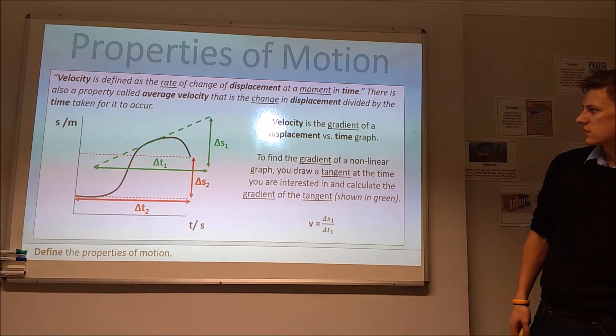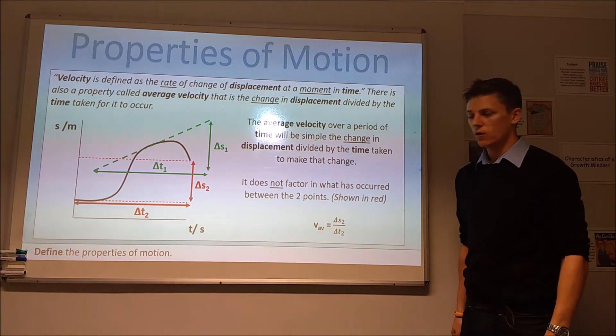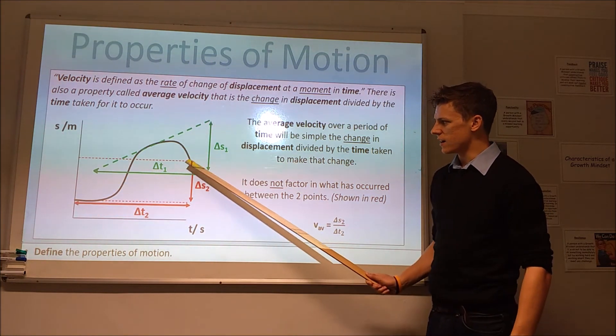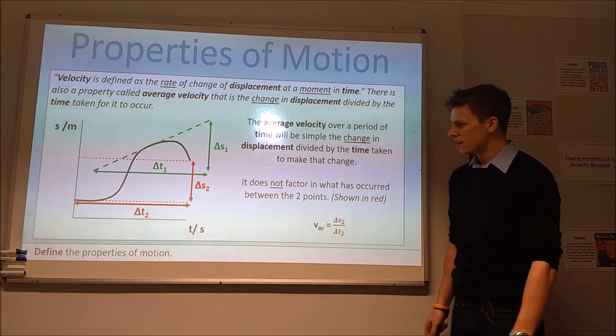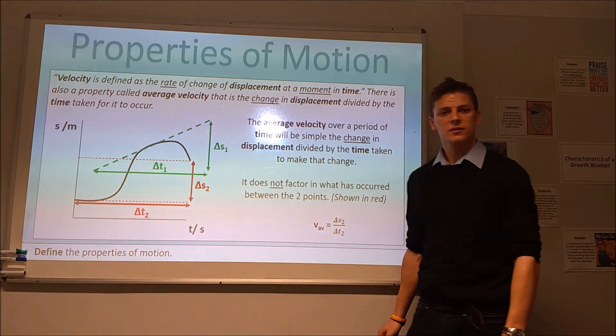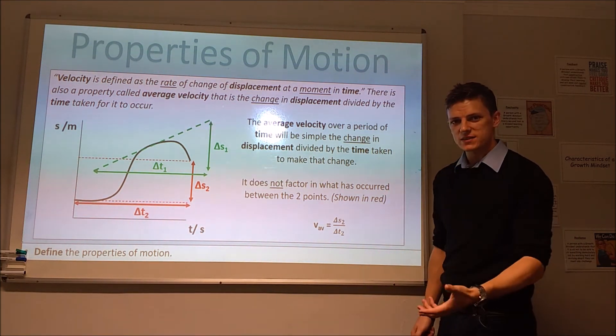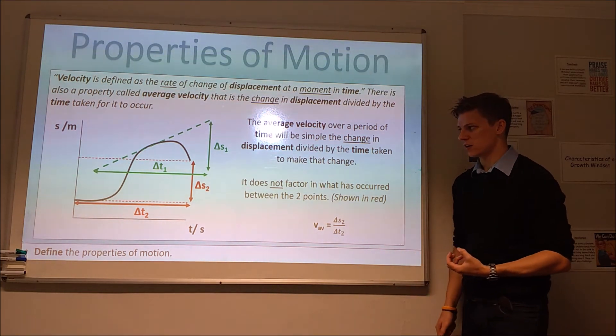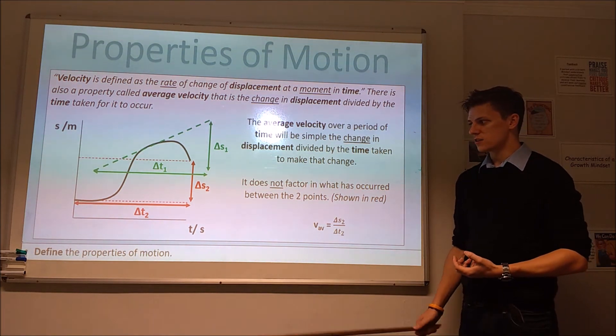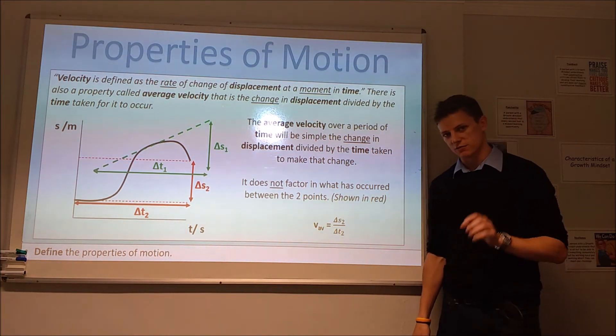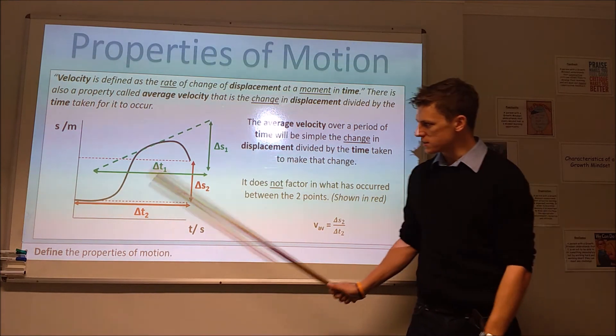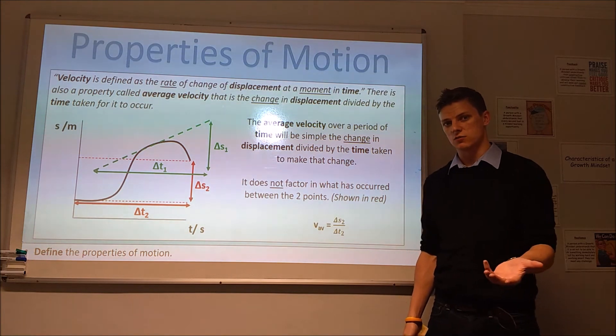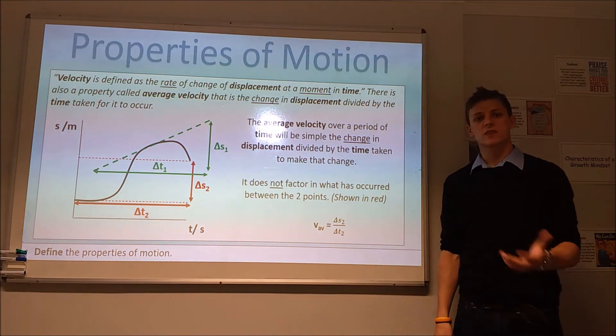Average velocity we'll do slightly differently. You can see that in red. For average velocity, all we're interested in is where did it start and where did it end. We can work out the total displacement. Then we want to know how long that took, and we divide the change in displacement by the time it's taken, and that will give us our average velocity during that period of time. You would almost certainly get completely different values for those two. But if this graph was a straight line graph, the instantaneous and the average velocity would be identical to each other there. But when we get a curved graph, they are different.